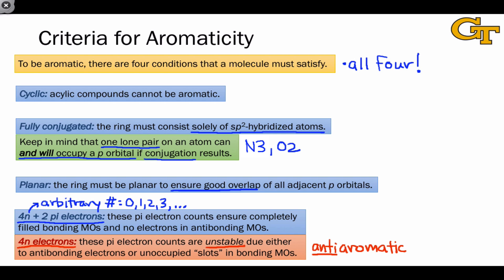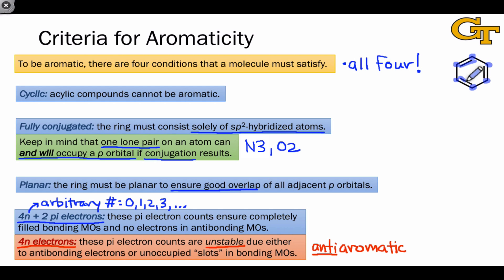It should go without saying that benzene is an aromatic molecule. It's completely planar, it's fully conjugated since each carbon is sp2 hybridized and has an unhybridized p orbital that participates in pi bonding. It's obviously cyclic, and the molecule has 6 pi electrons — one of the allowed numbers of pi electrons for aromaticity according to the 4N plus 2 rule.